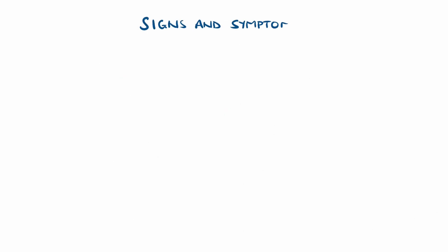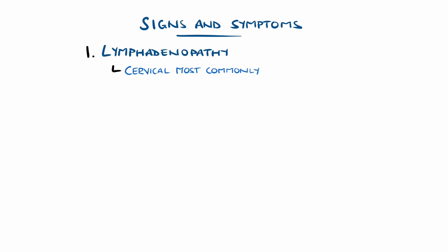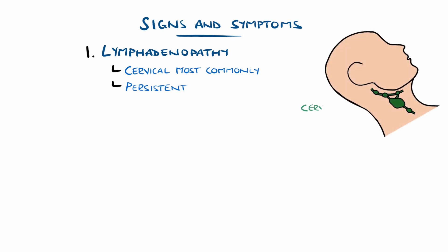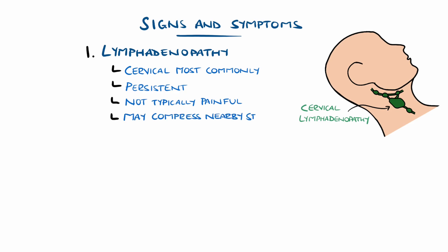The most common presentation is swelling of lymph nodes, known as lymphadenopathy, that is persistent without any other clear cause such as recent infection, usually lasting for several months, and most commonly occurring in the cervical lymph nodes. This is usually mildly painful at most, with most cases being painless. In rare instances, the swelling of the lymph nodes can cause symptoms such as shortness of breath, dysphagia, or even superior vena cava syndrome.